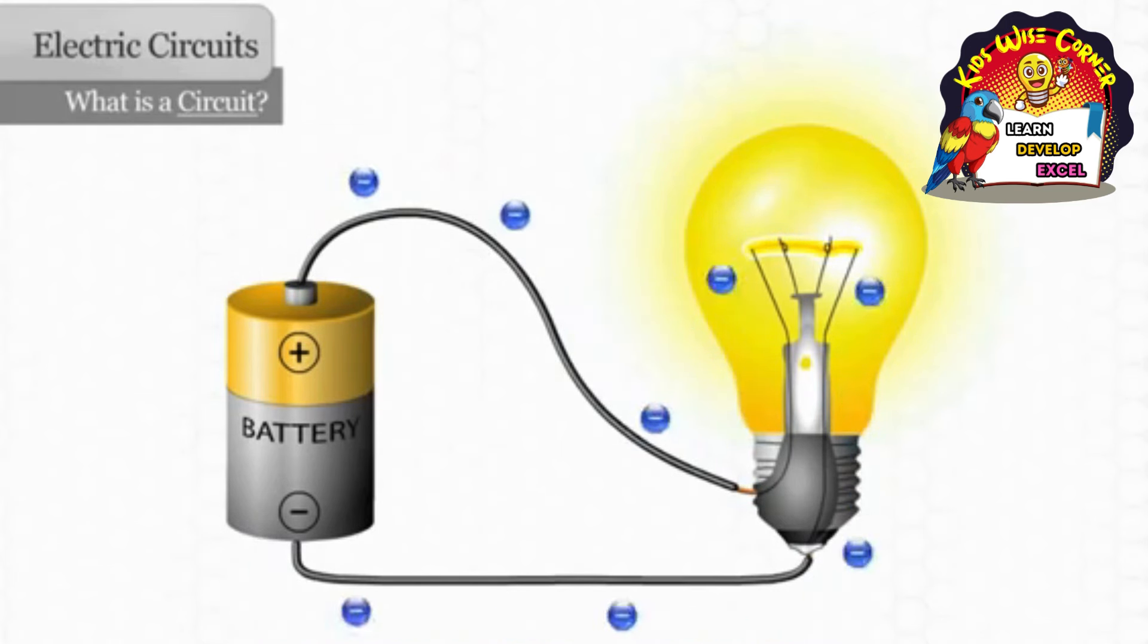When there is an unbroken path on which electrons flow, as in this example, it is called a complete circuit. The unbroken path that the electrons follow is called a closed circuit, because electricity will only flow on an unbroken path. The light bulb will not light unless there is a closed circuit.